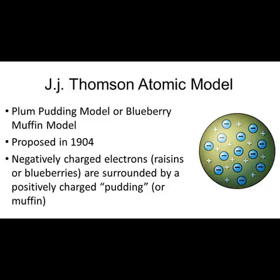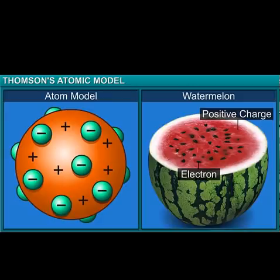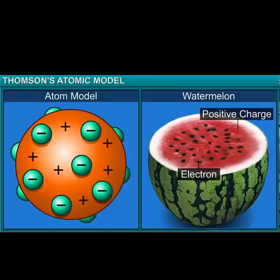English physicist Joseph J. Thomson discovered electrons in 1897, and after the discovery of electrons he proposed a plum pudding model of atomic structure in 1904. According to his model, atoms consist of a big positively charged sphere embedded with negatively charged electrons, like plums in a pudding. He also stated that the positive charge on the sphere is equal to the charge on the electrons, so the atom is electrically neutral.